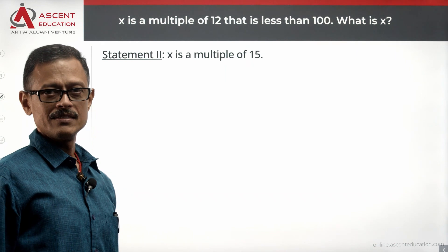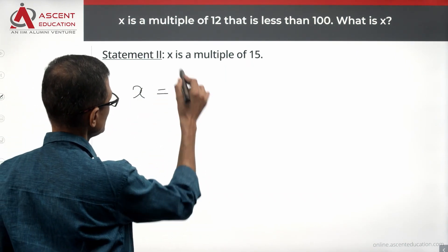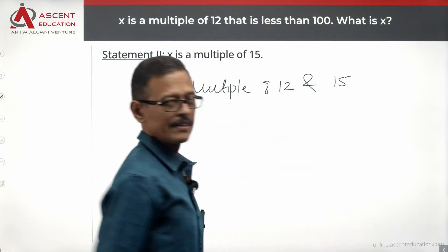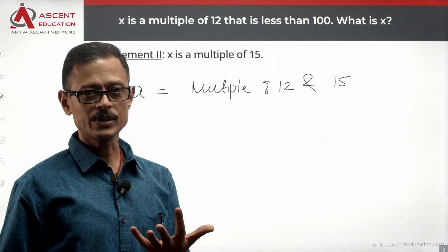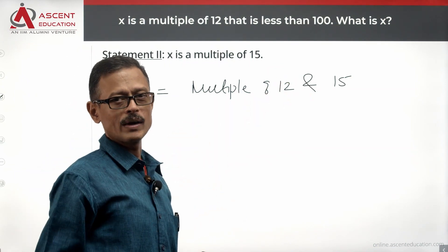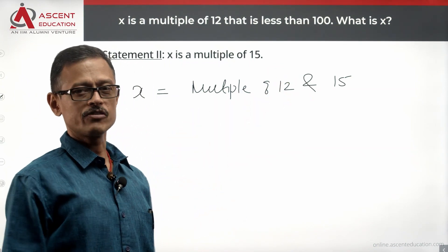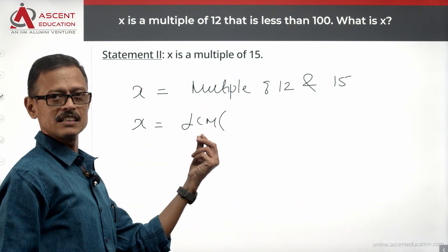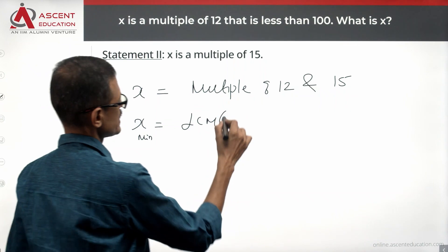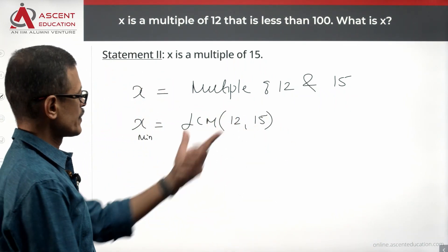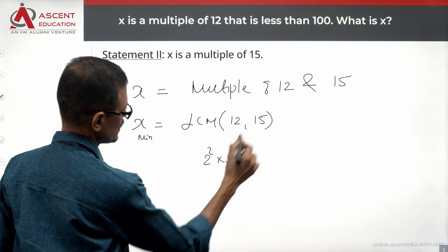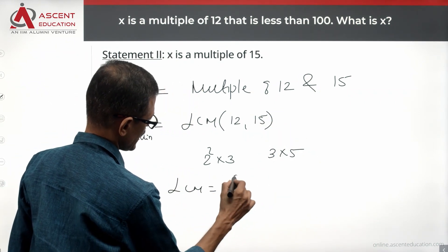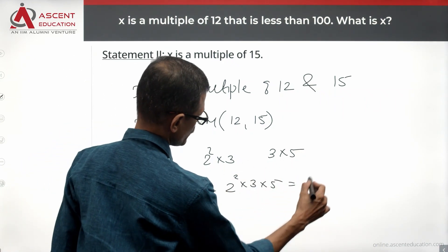Statement 2 says X is a multiple of 15. Which means X is a multiple of 12 and a multiple of 15, and it is less than 100. It is a common multiple of 12 and 15. We will find out the smallest common multiple of 12 and 15. X is at minimum the LCM of 12 and 15. What is the LCM? 12 in prime factors is 2 squared times 3. 15 in prime factors is 3 times 5. So the LCM equals 2 squared times 3 times 5, which is 12 times 5, which equals 60.